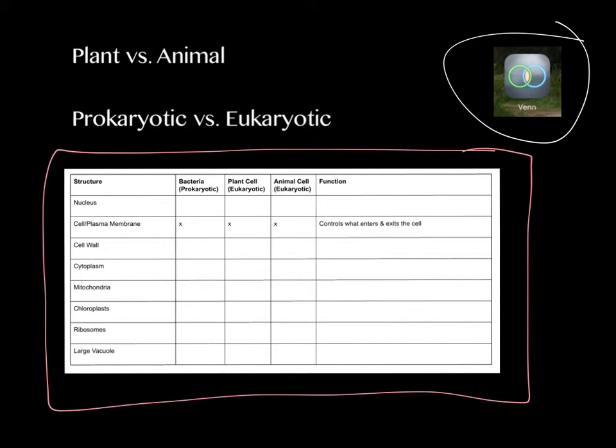What you're going to do is take the data from this chart along with information you learned in the microscope lab from the cells that you saw and create a Venn diagram to show the difference between one of these two sets of information. You're going to choose either a Venn diagram that shows plants versus animals or prokaryotic cells versus eukaryotic cells. You do one or the other, not both.